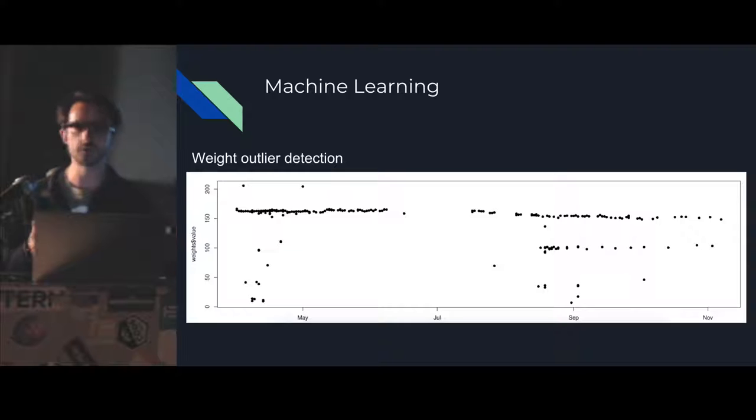This is a business problem for us. We can't measure how well this person is doing in our program if we can't confidently say which of these weights are from this person. So someone from our data science team went through and came up with an algorithm for every time a weight comes in based on the previous data we've seen.